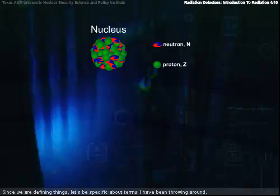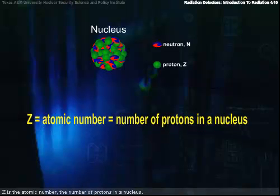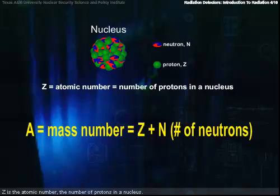Since we're defining things, let's be specific about terms I've been throwing around. Z, the atomic number, is the number of protons in a nucleus. A, the mass number, is the sum of Z and the number of neutrons.